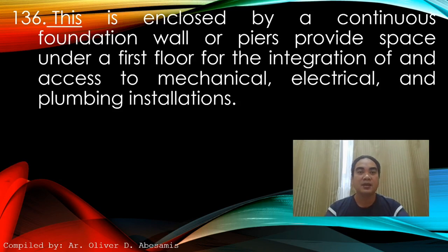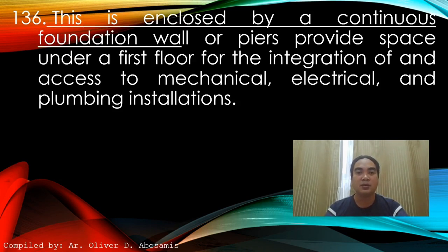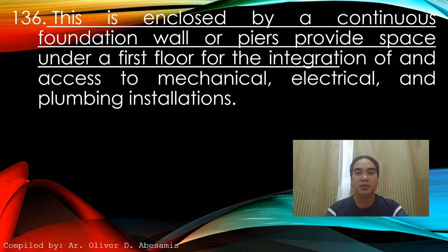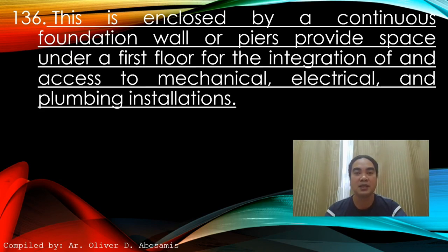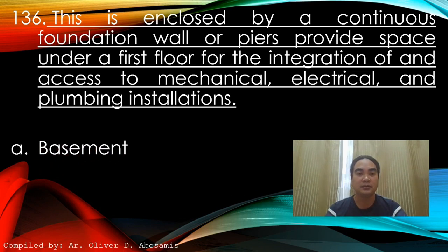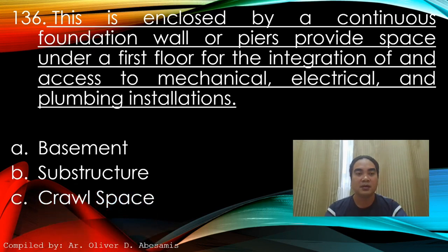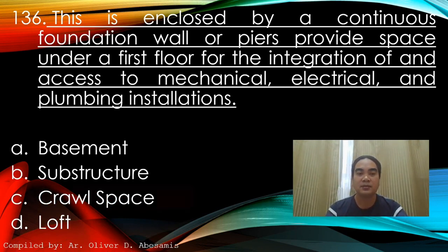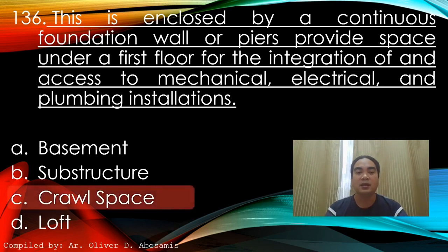Question 136: This is enclosed by a continuous foundation wall or piers, providing space under the first floor for the integration of and access to mechanical, electrical, and plumbing installations. A) Basement, B) Substructure, C) Crawl space, D) Loft. Answer: C) Crawl space.